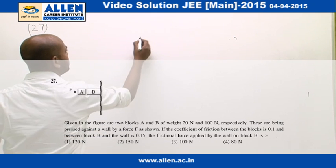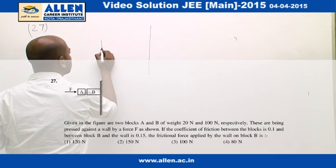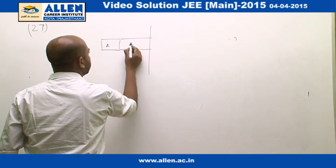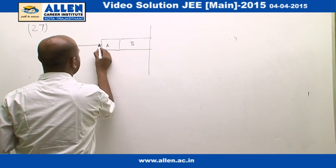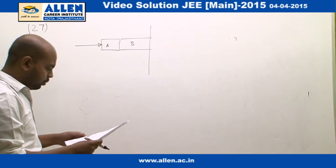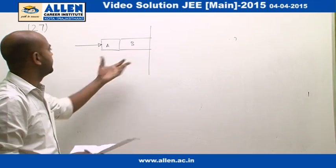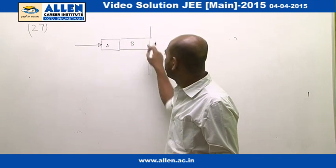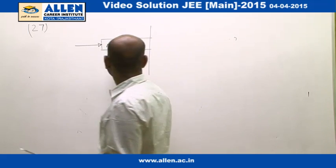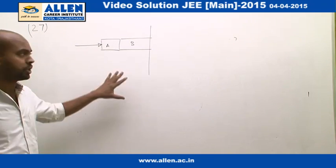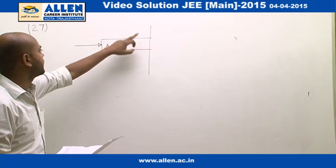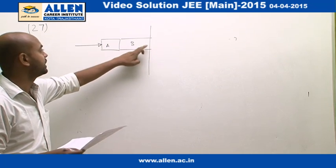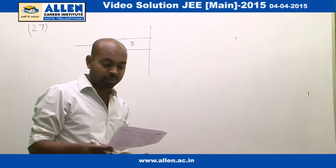In question number 27, two blocks of different masses A and B are pushed against a wall. As you know, this body is in equilibrium, so net force will be zero. If you consider both as a single body, because there is no relative motion and none of them is moving, we can consider them as a single body. The friction here will be static because there is no slipping.